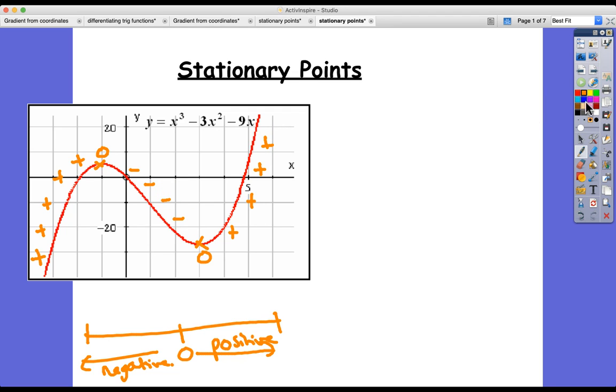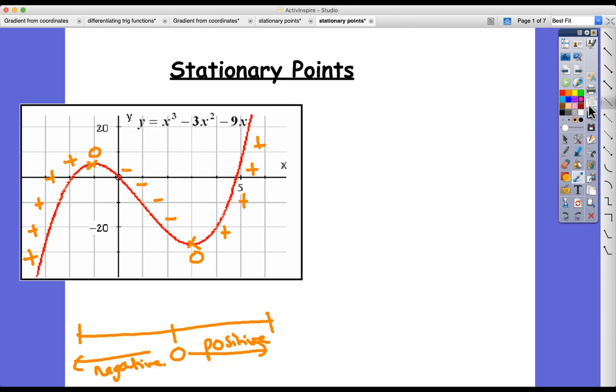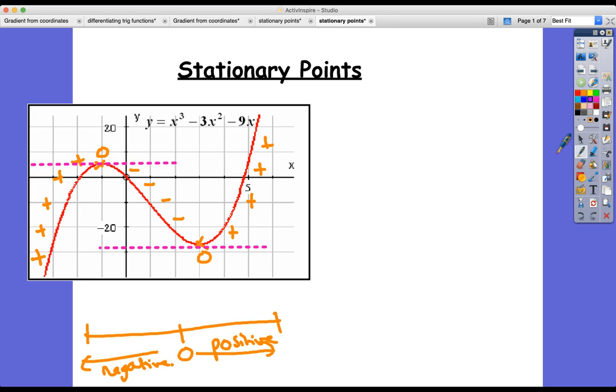So if I was going to draw a tangent at these particular points, what would that tangent look like? Well it would be a straight horizontal line here. Tangents would be horizontal, the gradient is equal to zero. Now a question might ask you to find the coordinates of those particular stationary points.